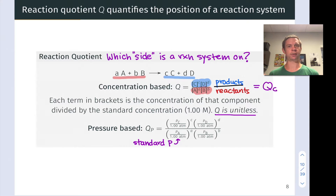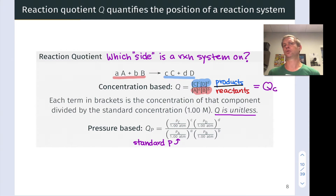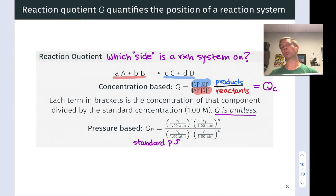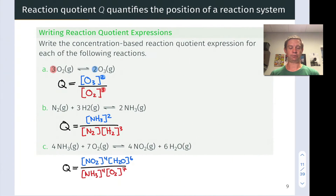To review: we've seen the reaction quotient as a measure of product over reactant concentrations or partial pressures. It gives a sense of which side a reaction system is on — are we more on the reactant side or more on the product side with respect to chemical equilibrium, the equilibrium position of the system?